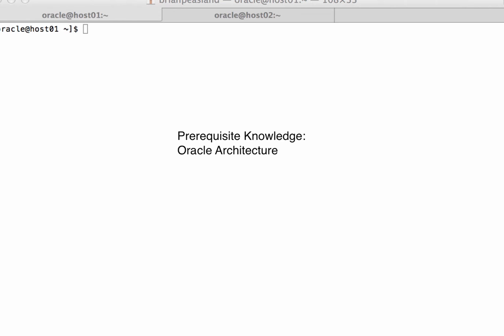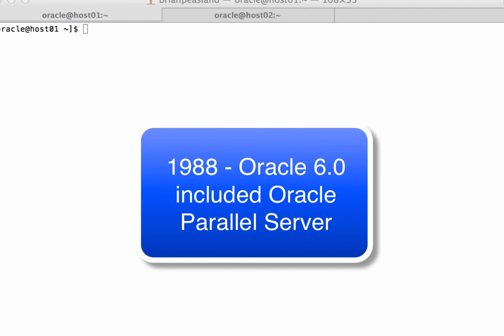Let me give you a little history. Back in 1988, Oracle version 6 was released, and this version included the very first commercially available clustered database system. Back then, it was known as Oracle Parallel Server, or OPS. Oracle Parallel Server did provide good scalability, but it did have its issues as well. Primarily, the biggest issue with OPS was a concept known as disk pinging.